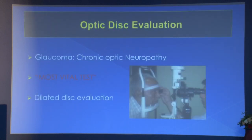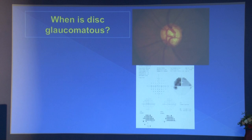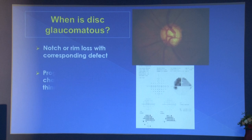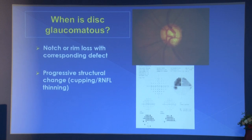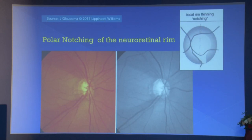Optic disc evaluation — the final initial diagnosis is always clinical, based on disc assessment. It is the most vital test as per the current definition of glaucoma. A disc is glaucomatous when there is notching or rim loss with a corresponding field defect, or progressive structural change. The hallmark is asymmetry and progression. A disc hemorrhage is also suggestive of glaucoma. RNFL defects and notching are key signs.